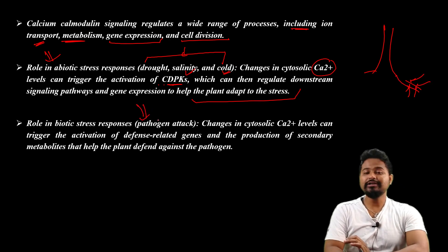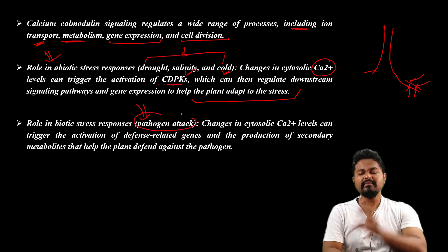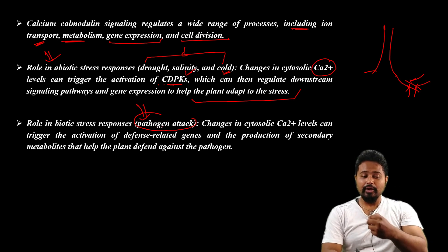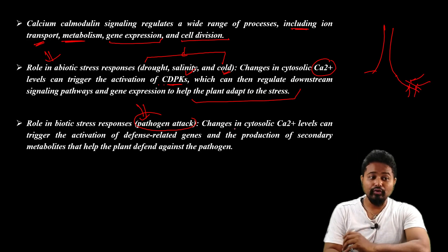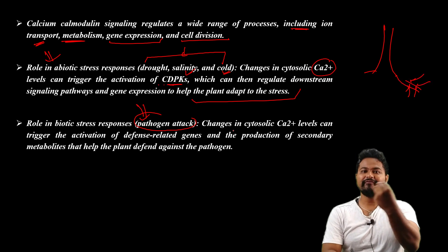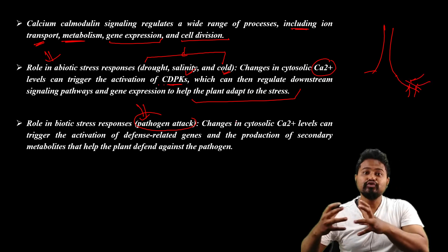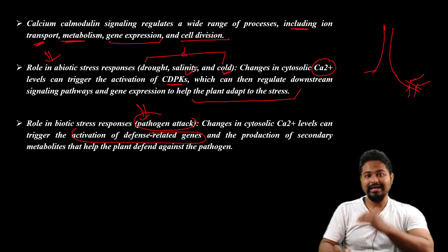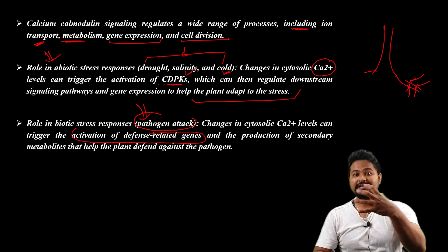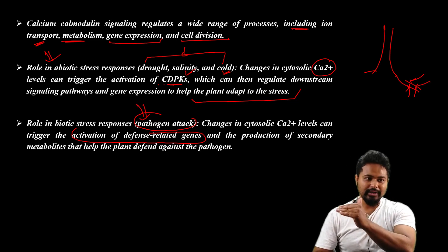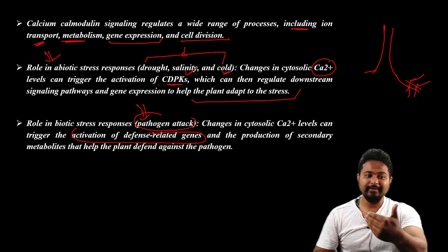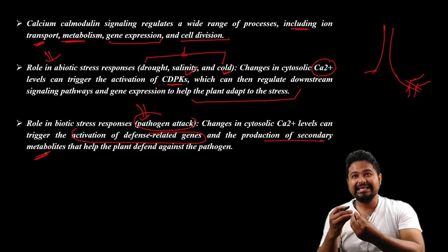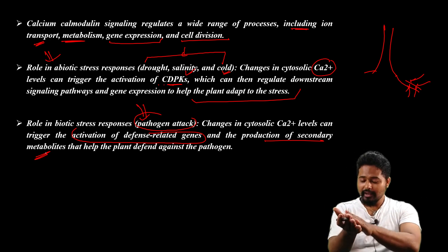The role in biotic stress involves pathogenic organisms. These include fungi and bacteria that infect the plant. If the plant is attacked by bacteria or fungi, the cytosolic calcium level changes and it triggers the activation of defense-related genes. These genes activate the production of secondary metabolites, such as tannins, flavonoids, and phenols, which are secreted by the plant cells.